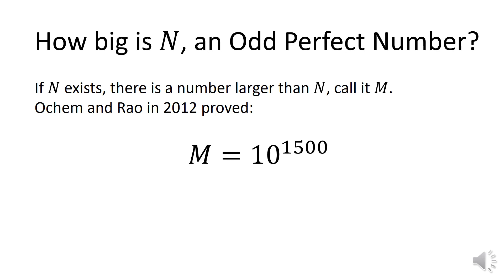The numbers of numbers is infinite. If N is an odd perfect number, there must be a number larger than N and less than infinity. Let this number be called M. Ochem and Rao proved that no odd perfect number exists below the value of M equals 10 to the 1500. That is one followed by one thousand five hundred zeros.